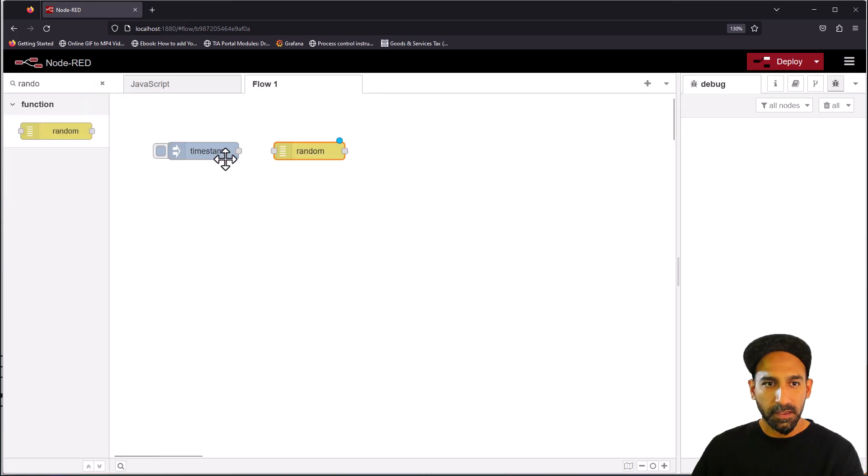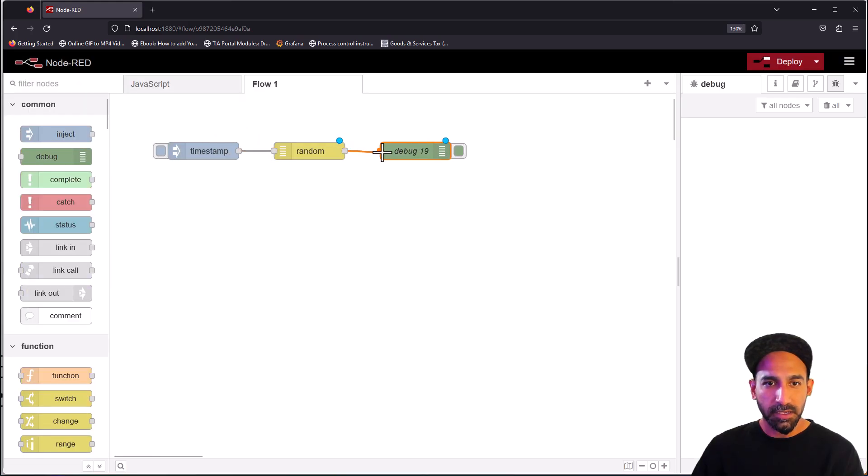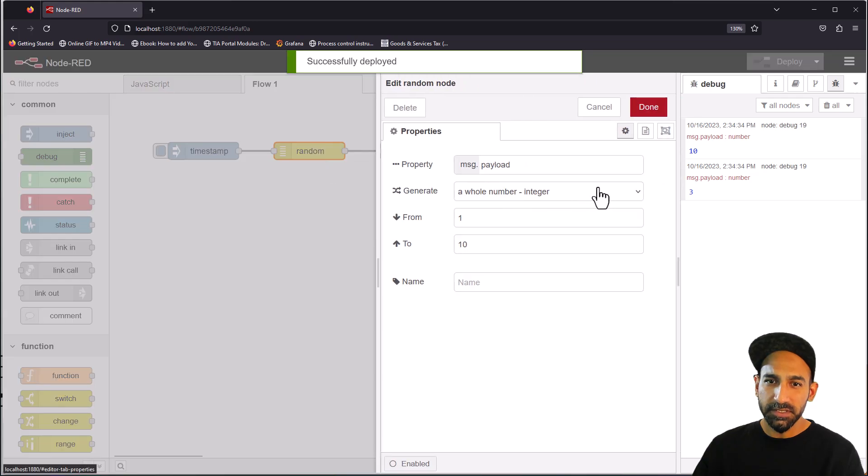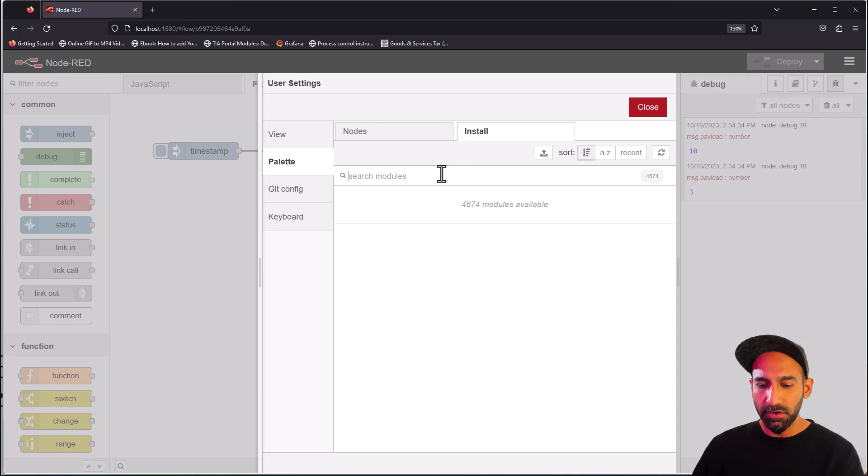For that I'm using this node. I had to install this node from manage palette, I had to install random. If you see here, this is already installed in my nodes. I have this random node.